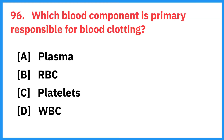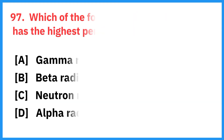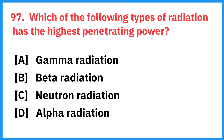Which blood component is primarily responsible for blood clotting? Right answer is platelets. Which of the following types of radiation has the highest penetrating power? Right answer is gamma radiation.